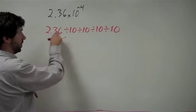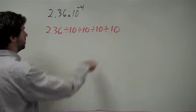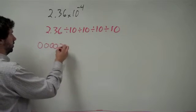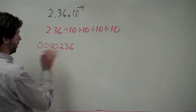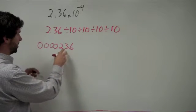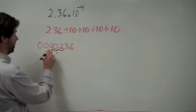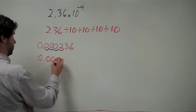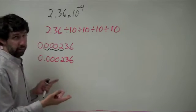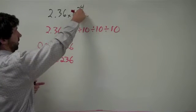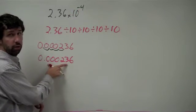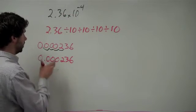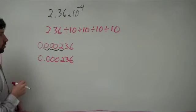It's making the number smaller by a factor of 10 four times. So what that means is I'm going to add some leading zeros here. Right now we've got a decimal point. We're going to divide by 10, so that moves the decimal one place, then divide by 10, divide by 10, divide by 10. And so we should end up with 0.000236. We check and make sure — because this is negative it should be a small number, which it is. So that reasonableness check checks out.